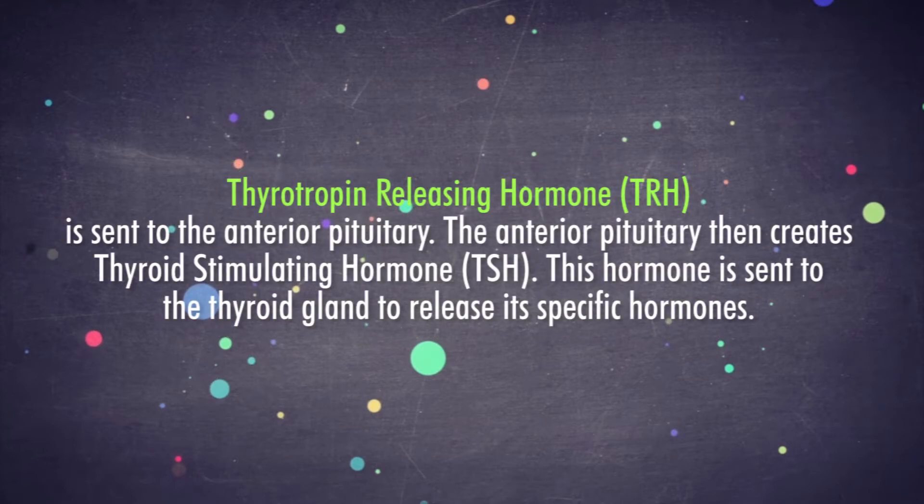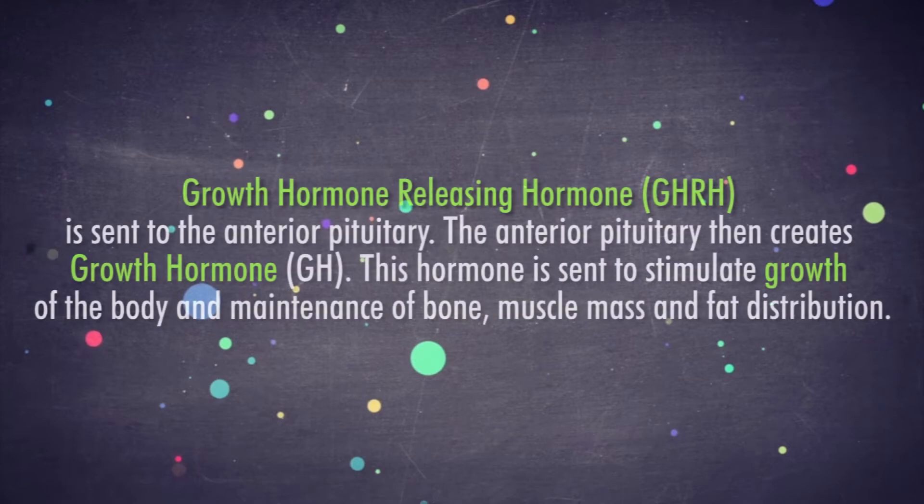The anterior pituitary then creates adrenocorticotropic-releasing hormone, ACTH. This hormone is sent to the adrenal glands to stimulate the release of their specific hormones. Thyrotropin-releasing hormone, TRH, is sent to the anterior pituitary.